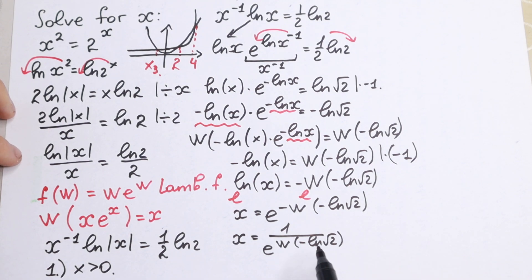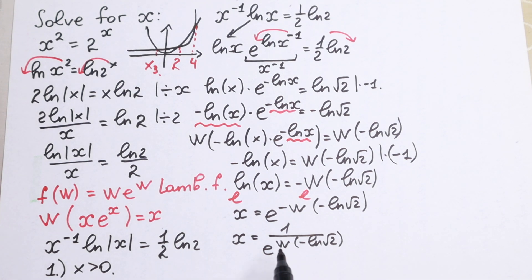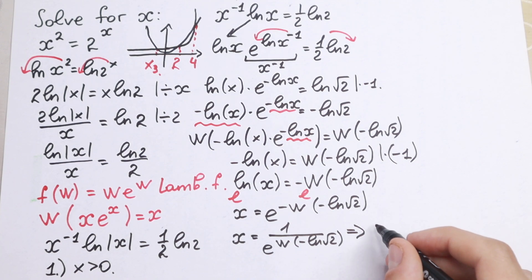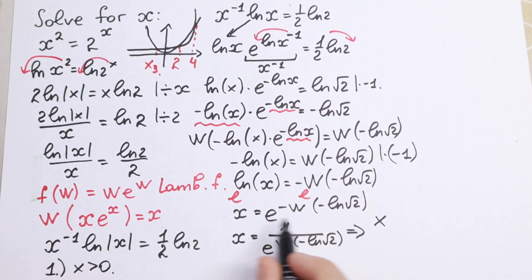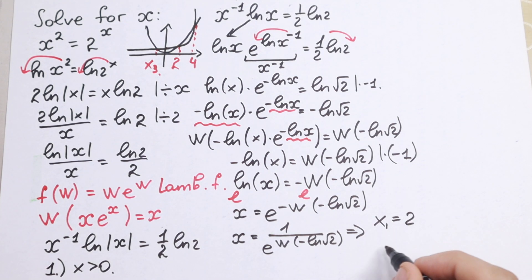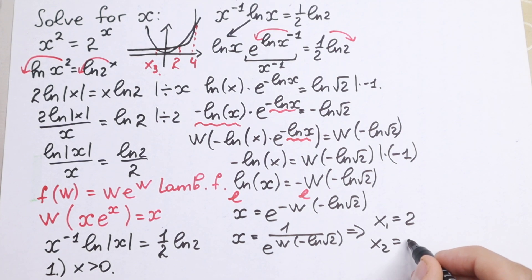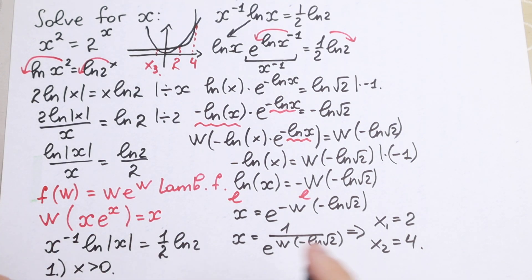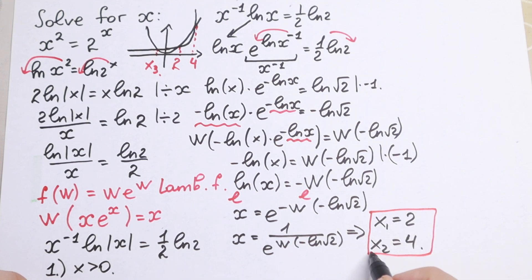This is a multi-valued function, so it can give both positive and negative roots. Evaluating this expression gives us the two roots x=2 and x=4, which are the obvious ones we identified at the start.